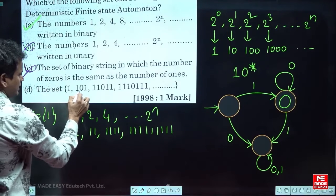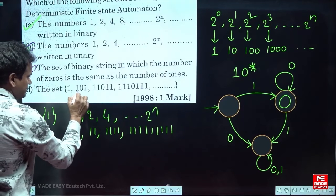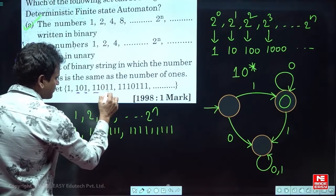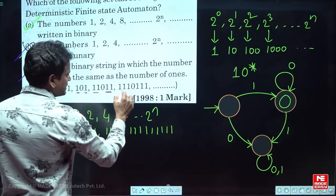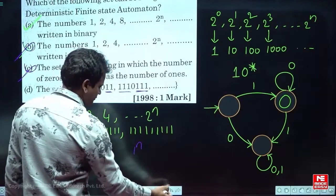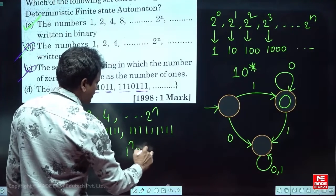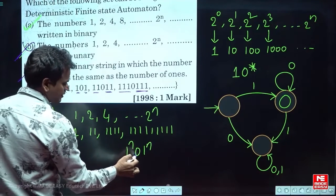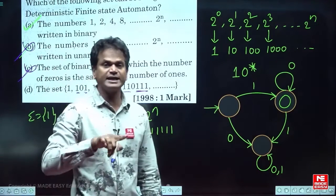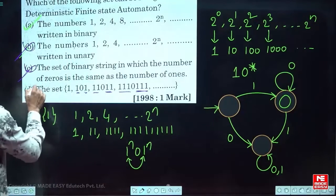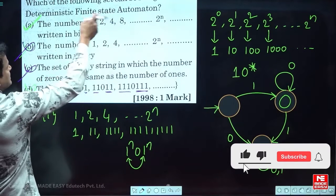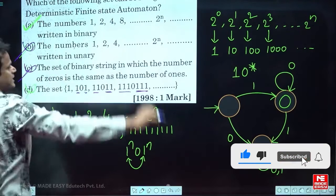The fourth option: if you observe the strings, there is a single 0, and the number of ones before and after the 0 are equal — so the pattern is 1^n 0 1^n. Again there is a comparison, and this is not possible with finite automata either. So the only option that can be recognized by a DFA is option A. Thank you.